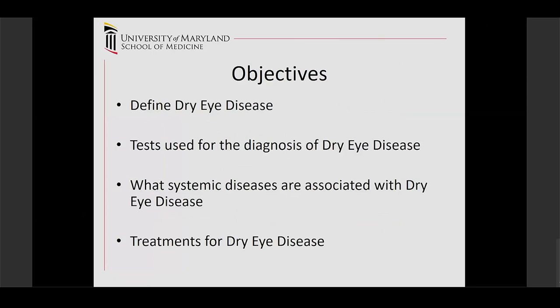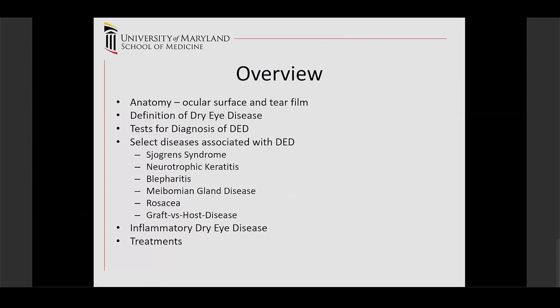The objectives today: I'm going to define dry eye disease, go over some tests that we use for diagnosis, systemic diseases that are associated with dry eye disease, and some treatments. This is the outline of the talk: anatomy, definition of dry eye disease, tests, and then we'll talk about associated diseases, inflammatory dry eye disease, and treatments.